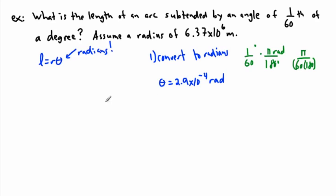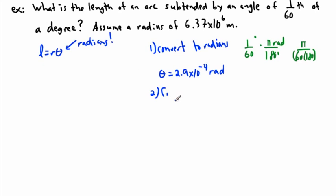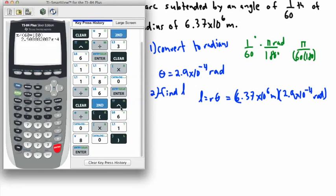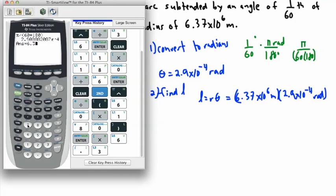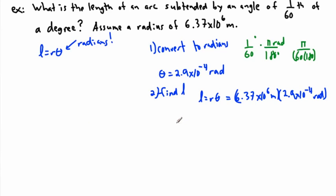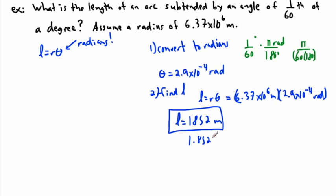Now we take that answer and calculate L. We use the equation L equals R theta. In this case, R is 6.37 times 10 to the 6 meters, times 2.9 times 10 to the minus 4 radians. We get out a calculator, multiply those together, and I get an answer of 1,852 meters.